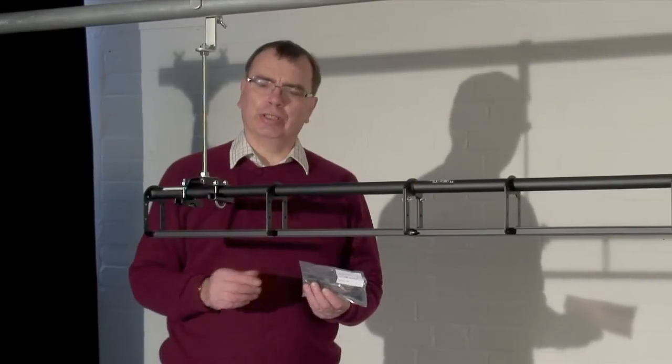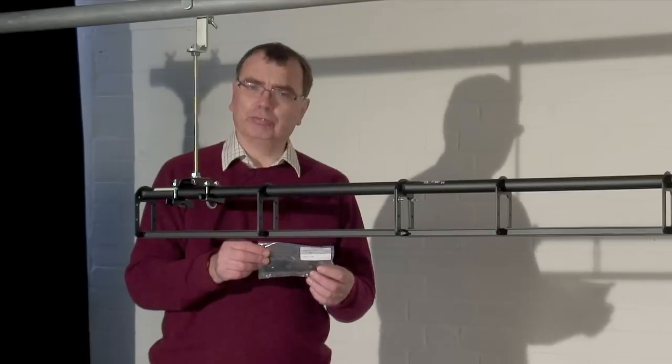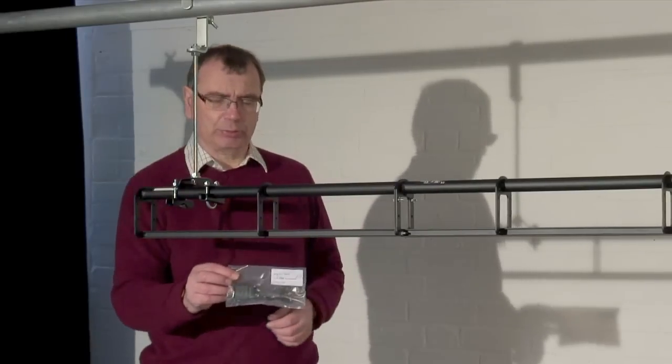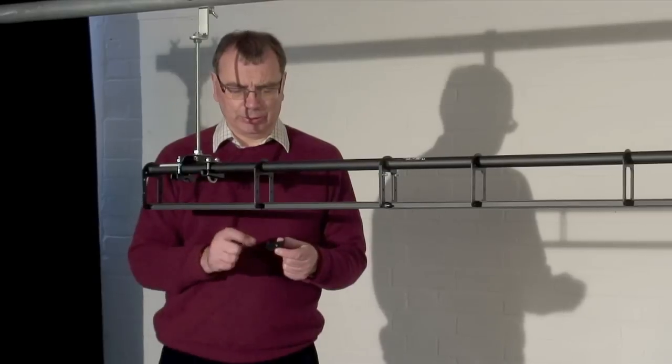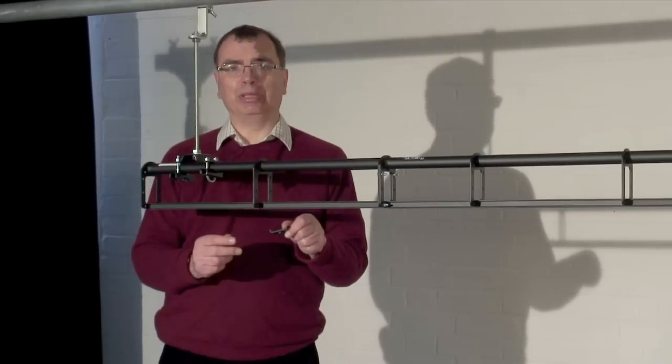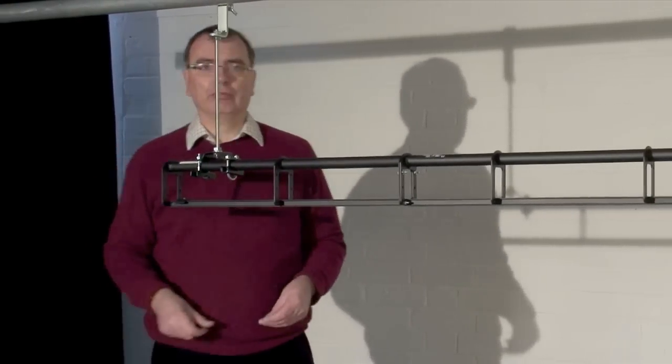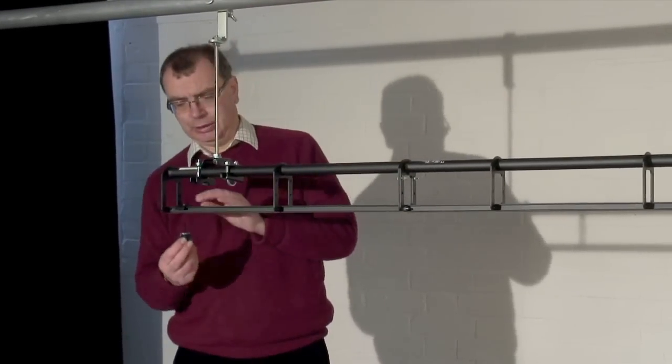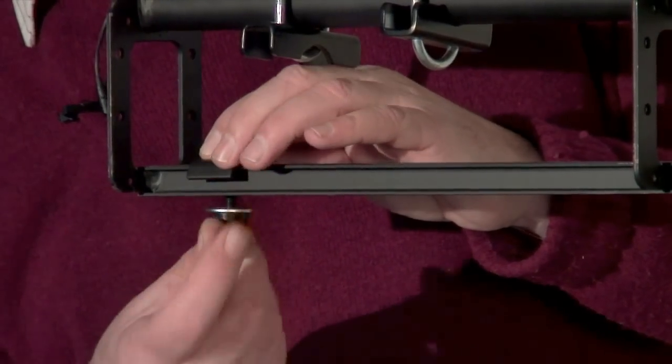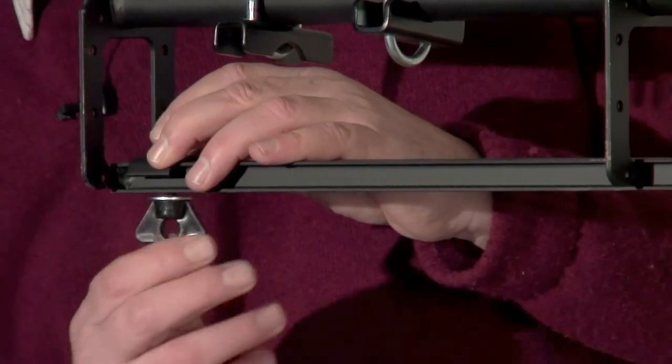Right so we've now got the curtain track in place so now we need to start putting the curtain on. To stop the curtain falling off the end we need some end stops which comes in a packet like this. You actually get three parts: this little bent piece of metal which fits on top of the track, a washer and this bolt here and that just screws up underneath and that will stop everything falling off the end of the track.